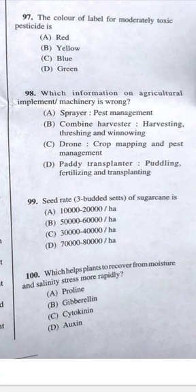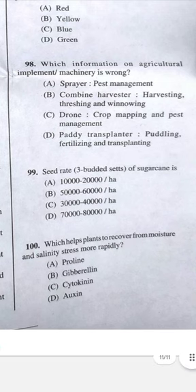Question 99: Seed rate of sugarcane is 30,000 to 40,000 setts per hectare — this answer is found in Arun Kantha books.